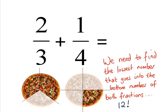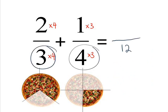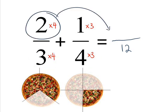To get 2 thirds as a number over 12, we need to multiply the top and the bottom by 4. To get 1 quarter as a number over 12, we need to multiply the top and the bottom number by 3. Doing this, we'll see the bottom number on the new fraction is going to be 12.